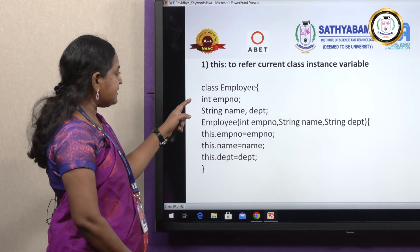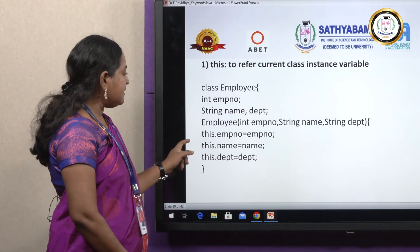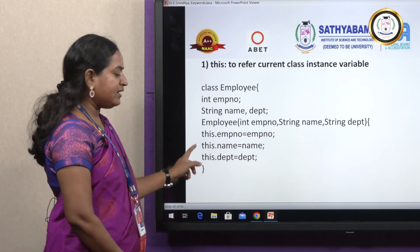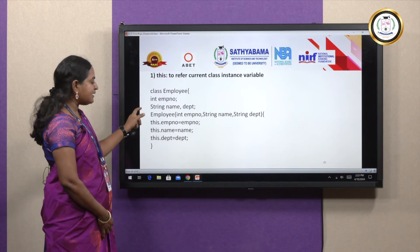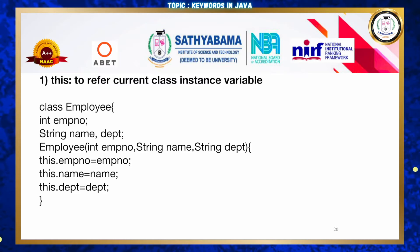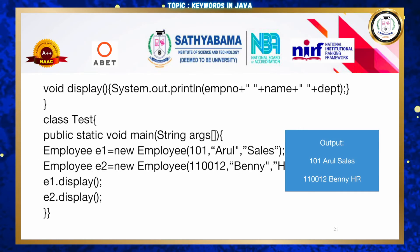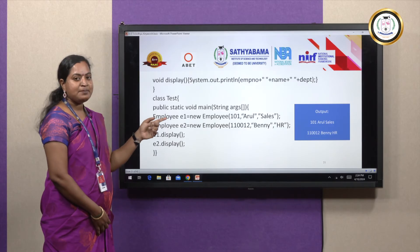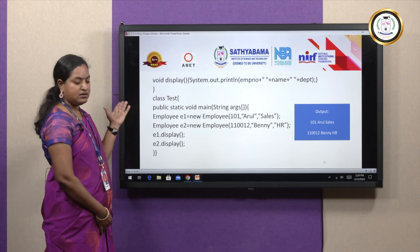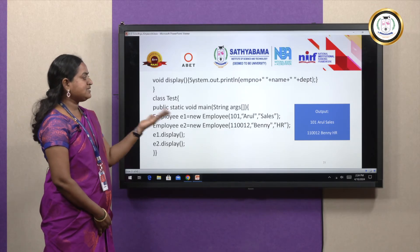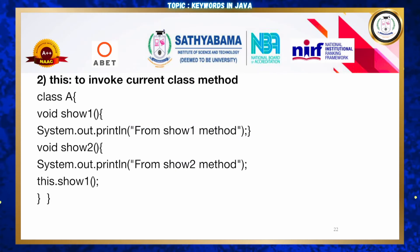First use — 'this' to refer to the current class instance variable. In the Employee class with three variables, the constructor uses 'this.employeeNumber = employeeNumber', 'this.name = name', and 'this.department = department'. The display method prints the employee number, name, and department. In the main method, two objects E1 and E2 are created with parameters, and the output is '101, Arun, Sales'.